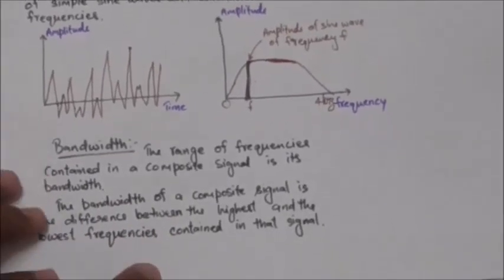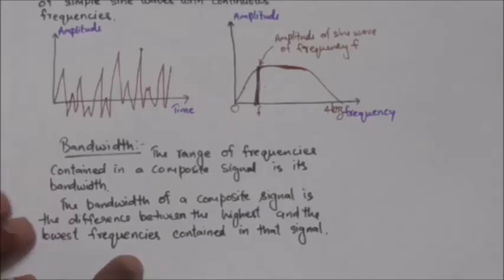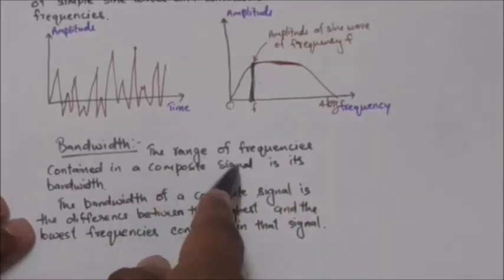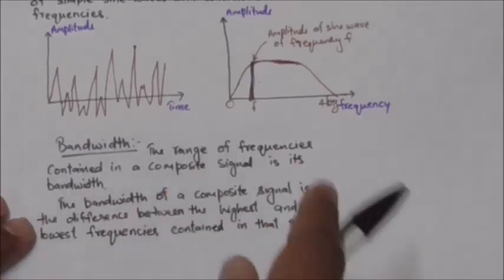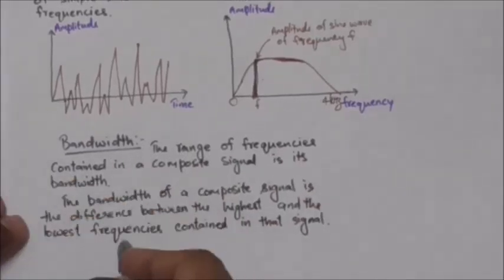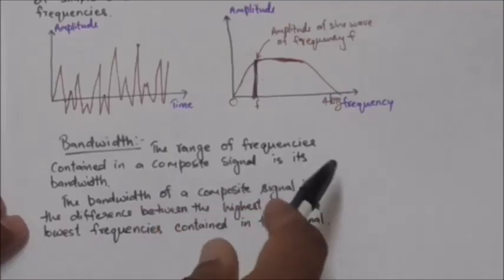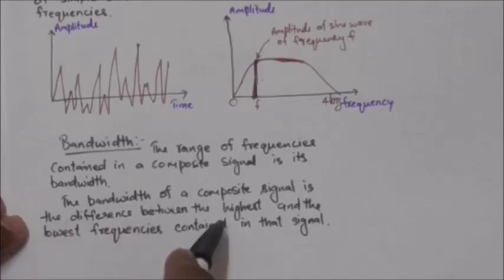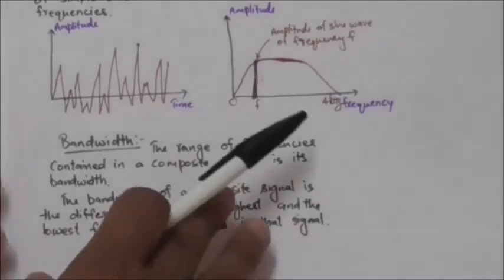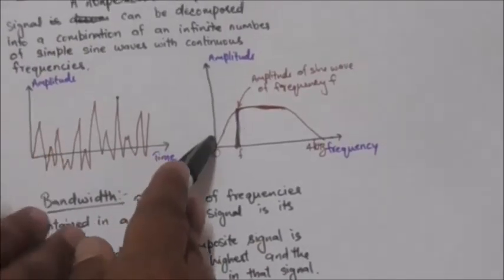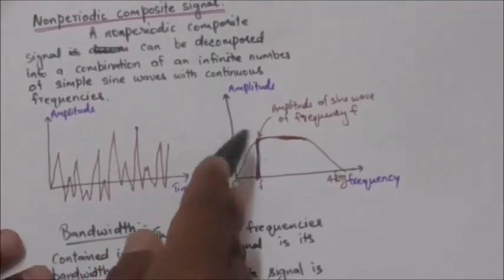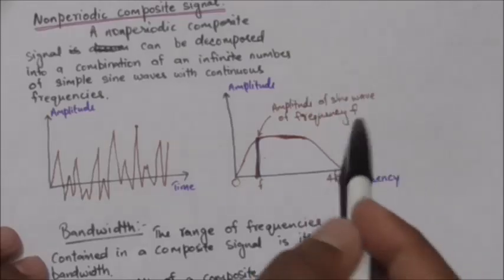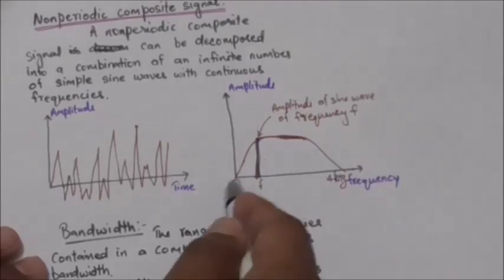Now we will study about bandwidth. The range of frequencies contained in a composite signal is its bandwidth. The bandwidth of a composite signal is the difference between the highest and the lowest frequencies contained in that signal. In the example we considered, the bandwidth is 4 kilohertz.